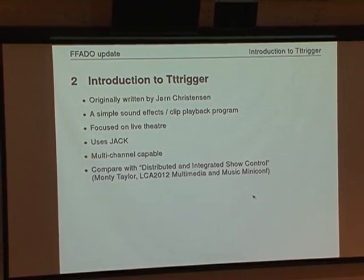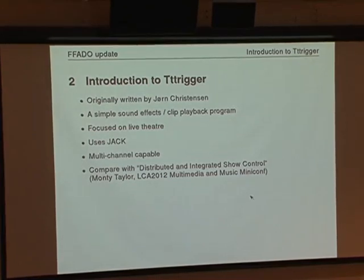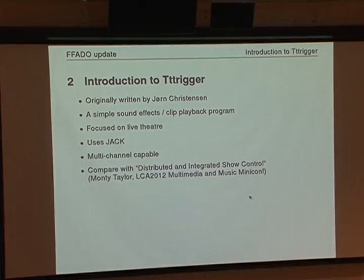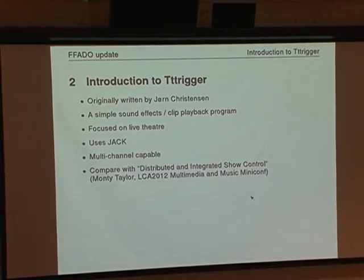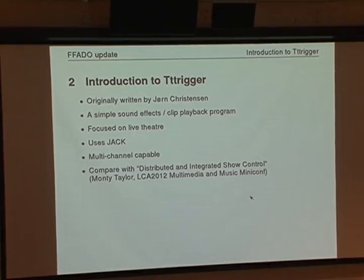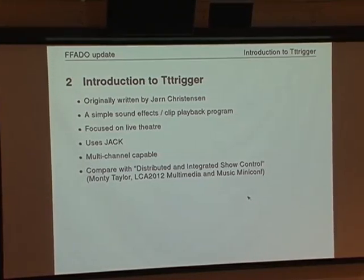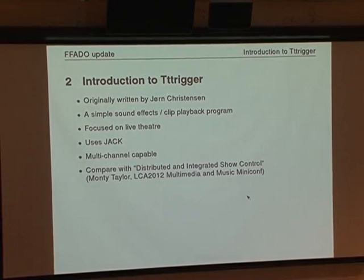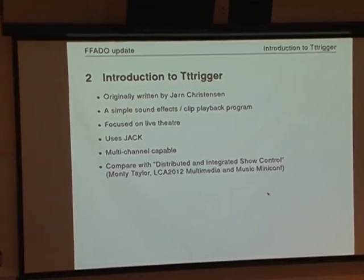The program uses Jack — the Jack Audio Connection Kit — to do its inputs and outputs. Partly as a consequence of that, it's possible to do quite complicated multi-channel setups. In a live theatre environment you might have main left, right, centre, but also surround speakers at the rear. TT Trigger allows you to connect a given clip to particular Jack channels, so one clip can go only to the front channels and another only to the back, or to all five if you've got a full surround sound clip.